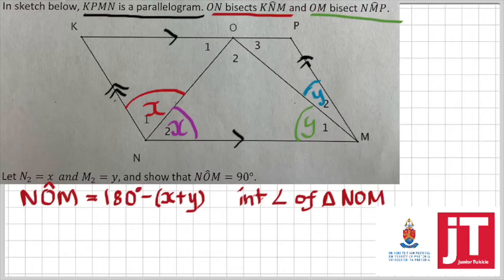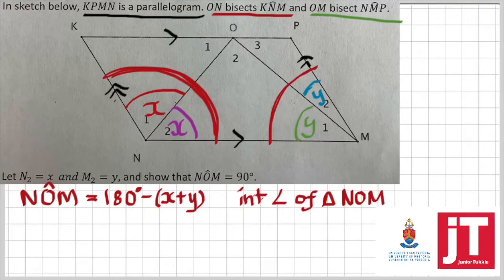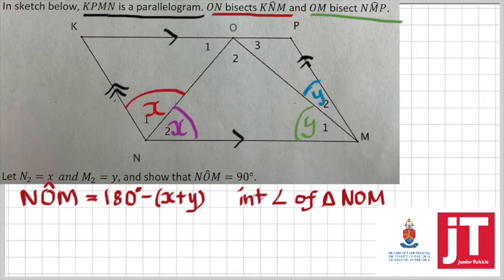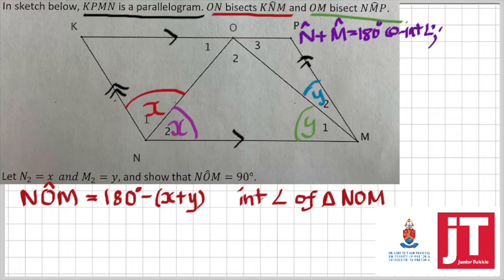So, simplifying, I can move on and say now using parallel lines that the whole angle N, the whole angle N, and I'm talking about that whole angle N, which is 2x, and that whole angle M, which is 2y, those two, if I add them together, they must give me 180 degrees. And the reason for that is that I'm using co-interior angles. So, I can start by writing the following statement to say, the angle N plus the angle M is equals to 180 degrees. The reason for that is co-interior angles. Our parallel lines is KN parallel to PM.